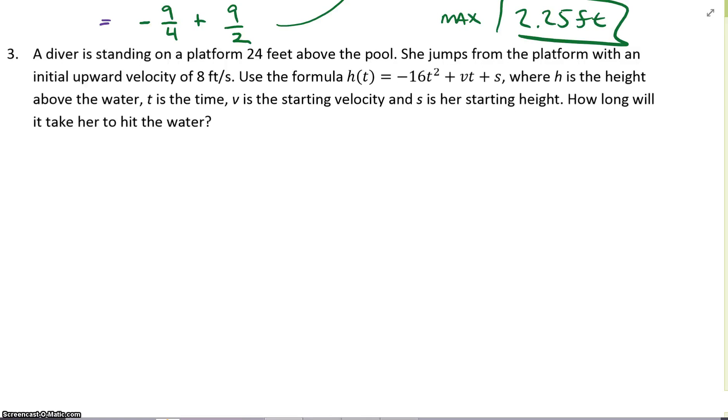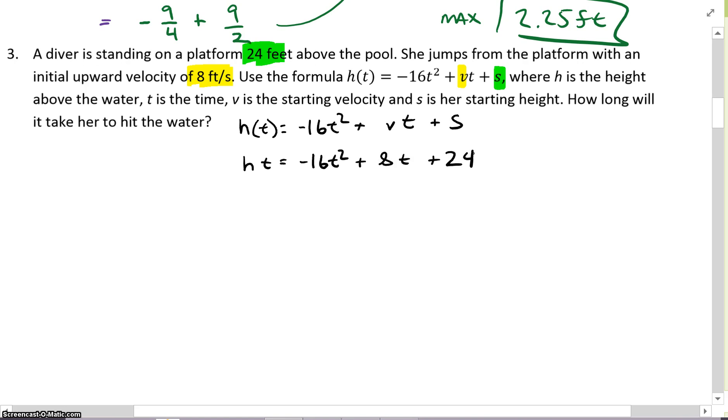They gave us a bunch of information. So my initial equation was h(t) = -16t² + vt + s. My v is my initial velocity, so that's 8 feet. My s is the initial height. So now we just plug this back in with what we know. h(t) = -16t² + 8t + 24. How long will it take her to hit the water? So we'll just make that 0. 0 = -16t² + 8t + 24.